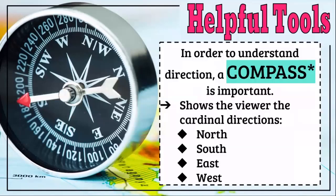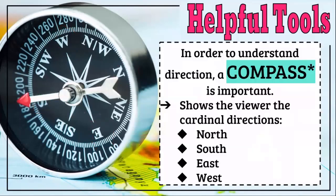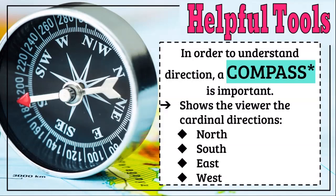Another helpful tool when reading a map is a compass. This shows the four cardinal directions: North, South, East, and West. You can also couple two directions together — this is Northwest — or say something is North of this and West of this. In geography, we don't use the terms right, left, on top of, or below. We use North, South, East, and West.